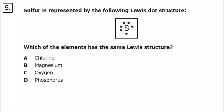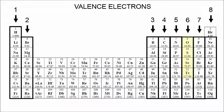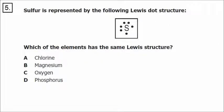In number five, we're talking about valence electrons again. This particular atom of sulfur has six dots around it because it's located in group 16 and has six valence electrons. So does oxygen, selenium, and tellurium — they all have six valence electrons. The question asks which element has the same Lewis dot structure. The correct answer is oxygen, because it also has six valence electrons.